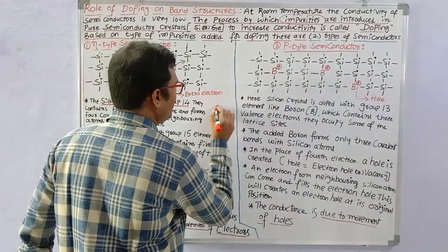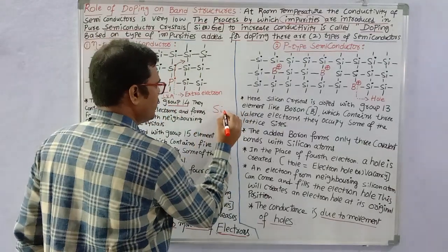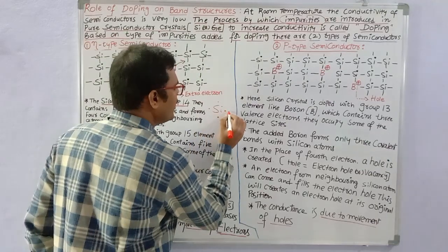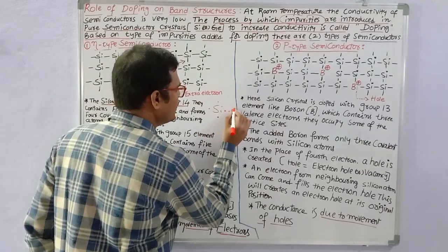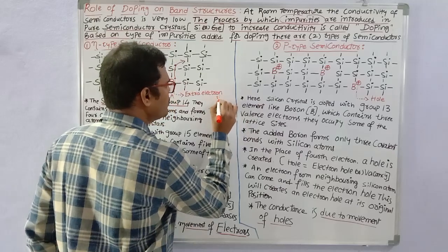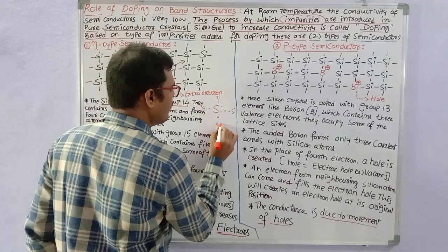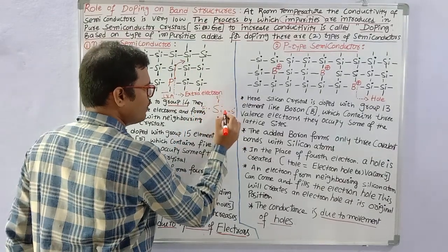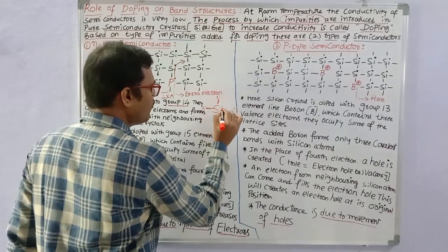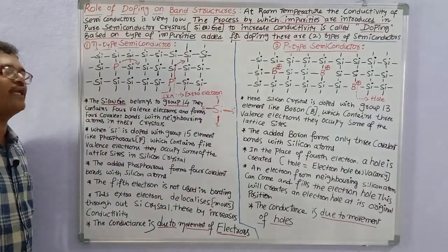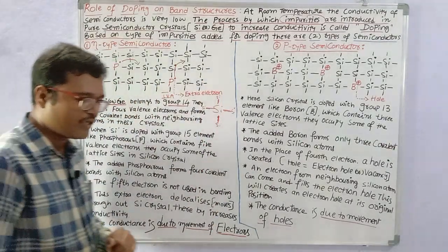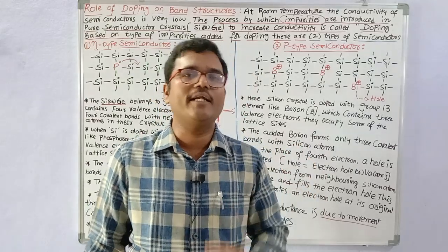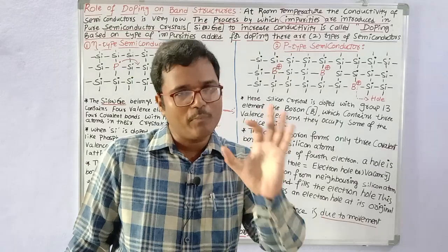Starting with silicon as our semiconducting material — silicon has four valence electrons. Each silicon atom forms four covalent bonds with neighboring silicon atoms. That is the tetravalency of silicon. Silicon and germanium are tetravalent elements because they belong to the fourth group, containing four valence electrons, and thus form four covalent bonds.